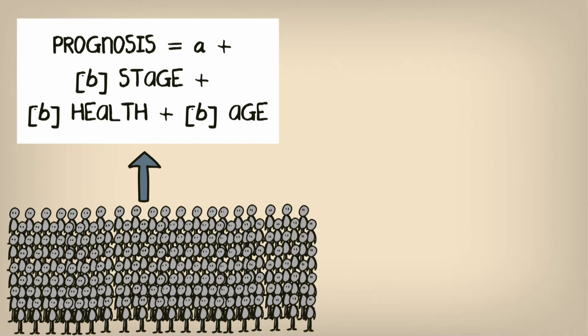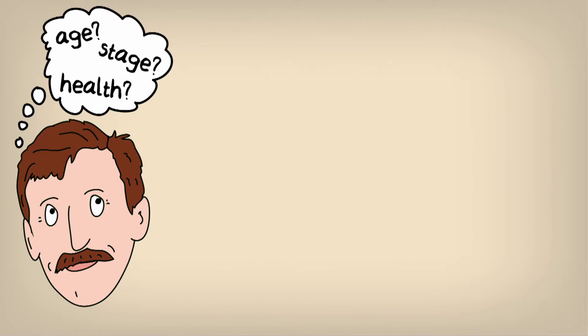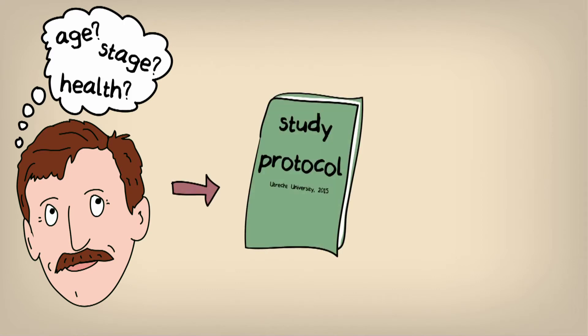The general recipe for prognostic research involves first identifying the kinds of prognostic information that you're interested in gathering, and then setting up a study to collect this information in a large group of people.